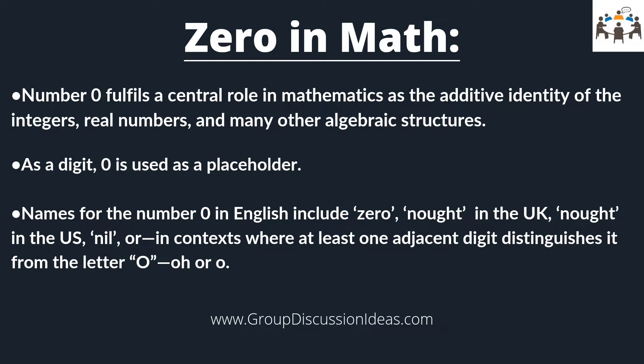Now let us discuss the role of zero in various areas one by one. We will first begin with the role of zero in maths. The number zero fulfills a central role in mathematics as the additive identity of the integers, real numbers and many other algebraic structures. As a digit, zero is used as a placeholder in place value systems.